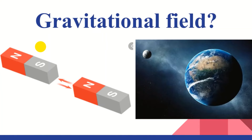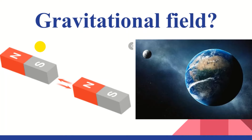Just like we have felt the force around a magnet extending in all directions up to a particular distance, a heavenly body also produces an influence of its force of attraction on other bodies. That's why the gravitational field is the total space around a body — especially a heavenly body — up to which its gravitational force can be experienced.